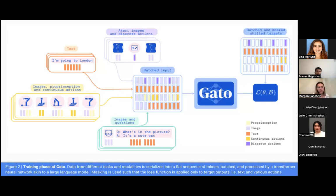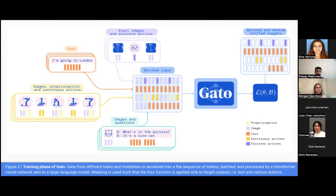This is their second figure, which illustrates some of the tokenization and how the architecture looks. For example, one task would consist of Atari images and discrete actions where you're playing a game — the light purple is image and dark purple is action, input sequentially into the model. Then there's text as a sequence of tokens, the robotic arm task with a combination of images and actions, and captioning with images and text. It's all embedded using the Gato model.